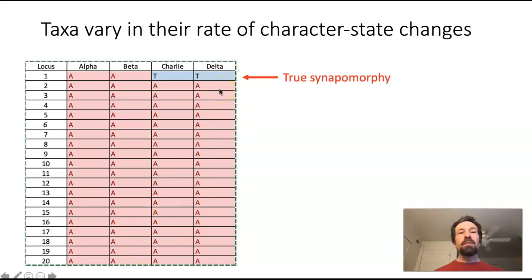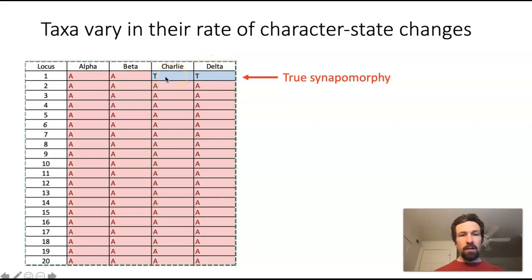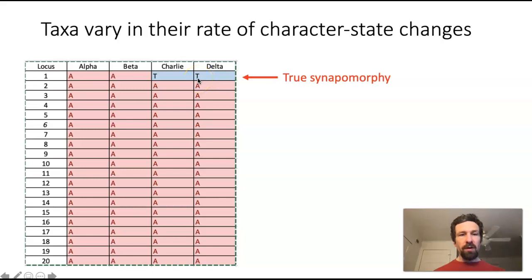In this made-up example, let's imagine that Charlie and Delta have a shared common ancestor, and that common ancestor had a change from A to T in locus 1. Both Charlie and Delta inherited the T, and so in this made-up example, the T is a synapomorphy — a character state inherited by virtue of descent and a change from a common ancestor. This will be the only true phylogenetic signal, telling us that Charlie and Delta are going to group together. In a real analysis we'd have more data and hopefully more synapomorphies, but this will help illustrate the point.